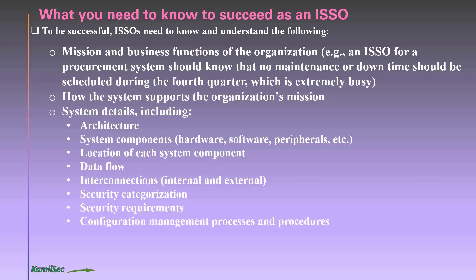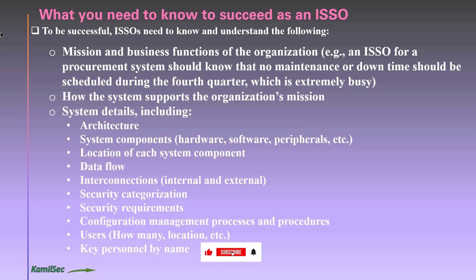You should know the configuration management process and procedures your system implements. You should also know how many users are on the system and their locations — on-premises or remote. Know all key personnel by name: the system owner, system admins, database admins, network engineers, and everyone who is a stakeholder within your system. In short, the key to success as an ISSO is to build relationships with key personnel who have the authority and ability to ensure compliance with security laws, regulations, guidance, and requirements.